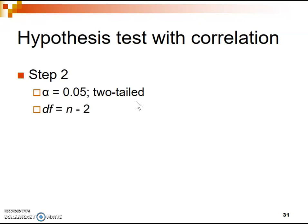One major thing that changes for the correlation is the degrees of freedom. In all previous analyses we used the formula n minus one, but for correlation it's actually n minus two. Since we're dealing with SPSS output, we can get the value for n directly from our SPSS output.